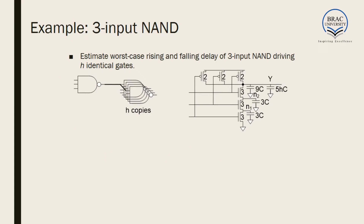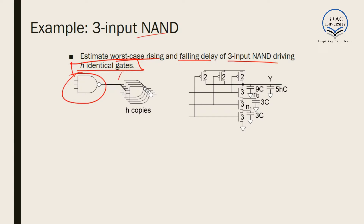Now we will estimate the delay of a 3-input NAND gate using the Elmore delay model. We need to estimate the worst-case rising and falling delay separately for a 3-input NAND gate driving H identical NAND gates. The number of identical gates each gate drives is called fanout, so here we have a fanout of H.